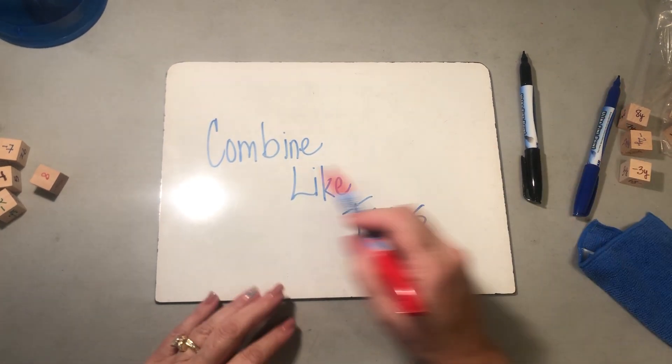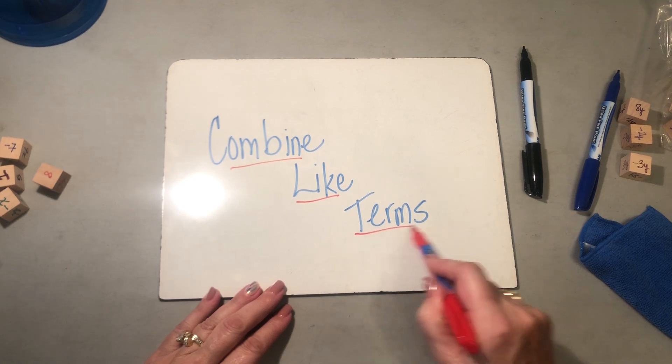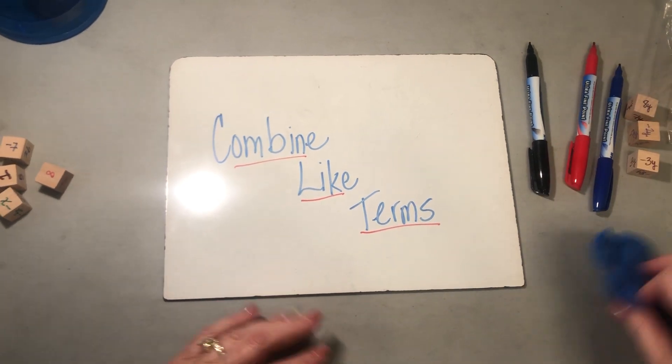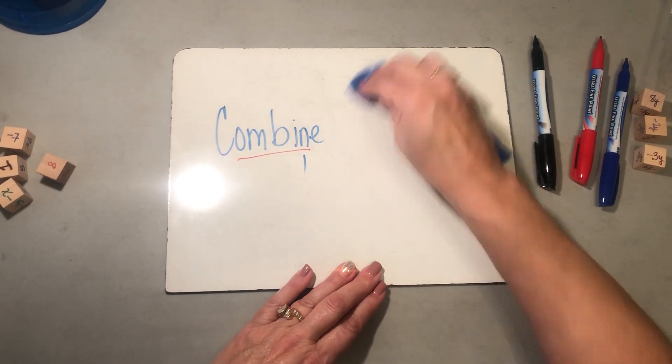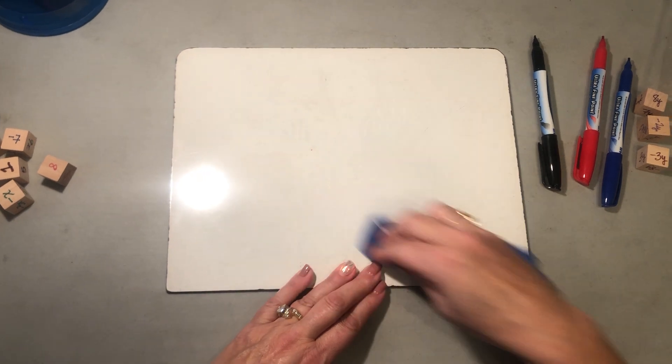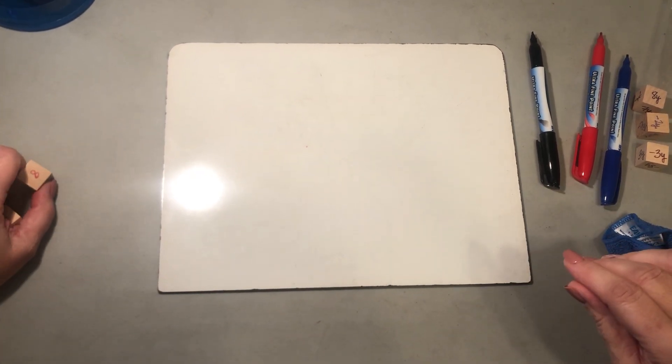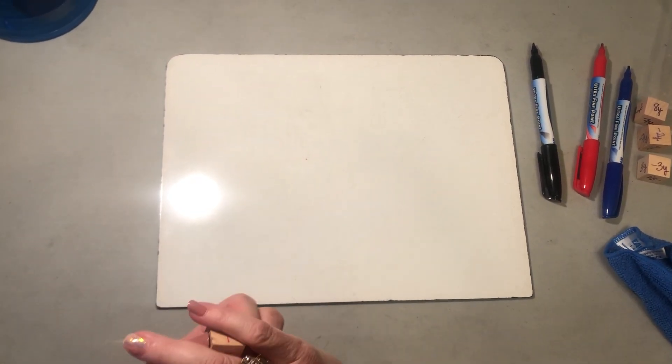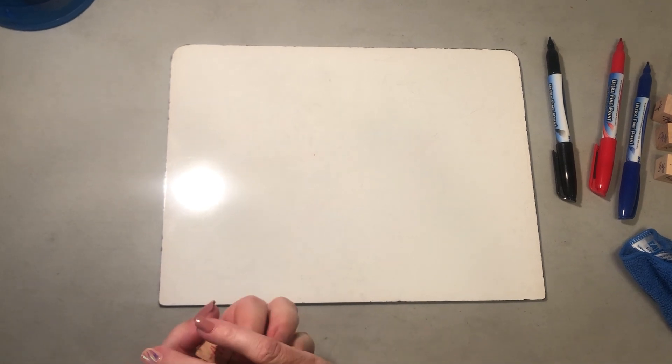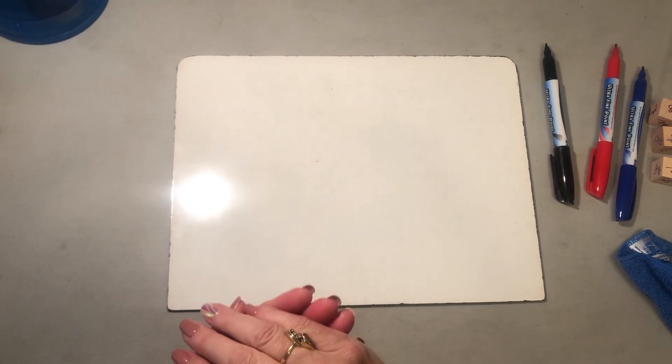Okay, this video is going to help you learn to combine like terms. So that's what we're going to be looking at. I'm going to roll the dice here a few times, and what you're going to do is combine the terms that are alike and simplify them down using your integer rules about adding and subtracting positives and negatives.